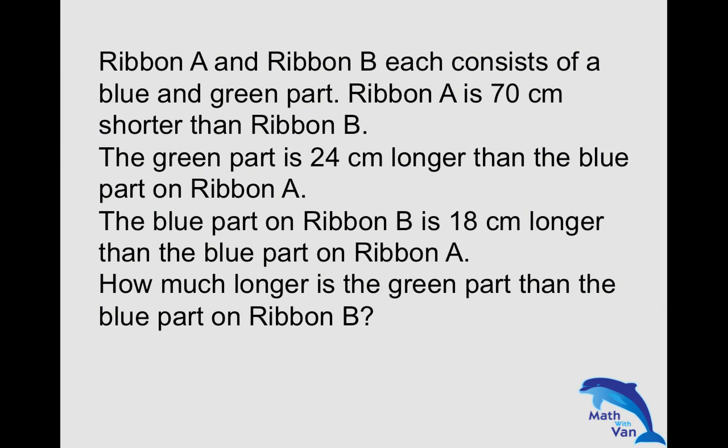Ribbon A and Ribbon B each consists of a blue and green part. Ribbon A is 70 cm shorter than Ribbon B. The green part is 24 cm longer than the blue part on Ribbon A. The blue part on Ribbon B is 18 cm longer than the blue part on Ribbon A. How much longer is the green part than the blue part on Ribbon B?